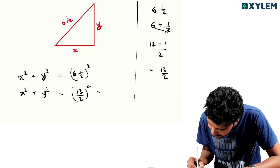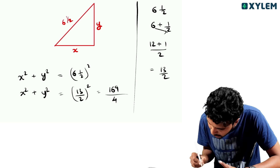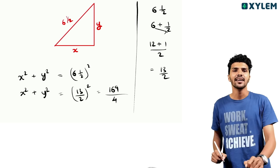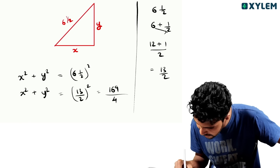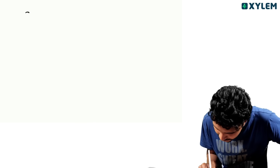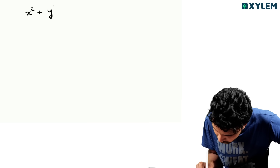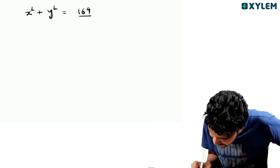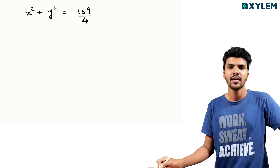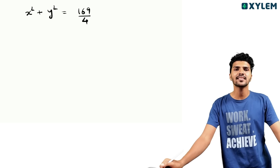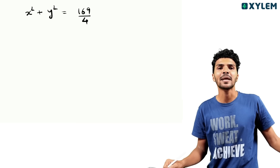13 by 2 squared is equal to 169 by 4. So x square plus y square is equal to 169 by 4.